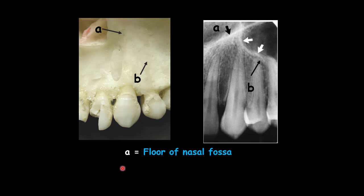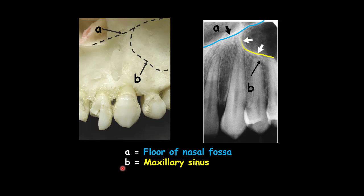The lateral wall of the nasal floor is adjacent to the medial wall of the maxillary sinus. The A dot line is showing the floor of the nasal fossa and the B dot line is showing the position of the floor of the maxillary sinus in the canine region. The floor of the sinus and the nasal cavity are superimposed and seen crossing each other, forming an inverted Y in this area.